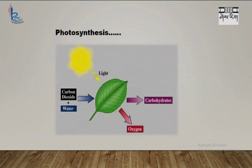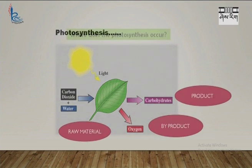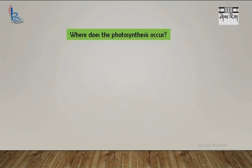This picture gives a general idea of photosynthesis. As you can see in this figure, plants absorb sunlight, they use carbon dioxide and water as raw materials, form carbohydrates as product, and oxygen as byproduct. So let us talk about the location or site of photosynthesis.